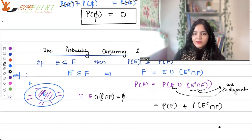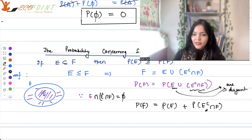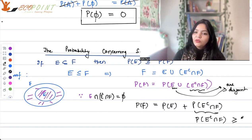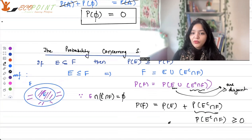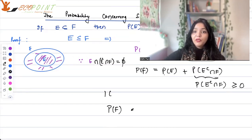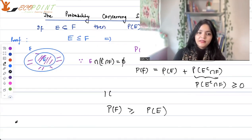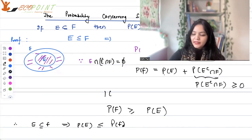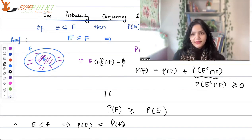So probability of F equals probability of E plus something. We know that probability of E complement intersection F is a probability and therefore it is greater than or equal to zero. So probability of F is probability of E plus something positive or zero, which means it is greater than or equal to probability of E. Therefore, if E is a subset of F, that automatically implies probability of E is less than or equal to probability of F. This was one way of proving it set-theoretically. Brushing up your set theory properly will help a lot in probability. Thank you very much — this is what I wanted to discuss today. I'll see you in the next lecture.